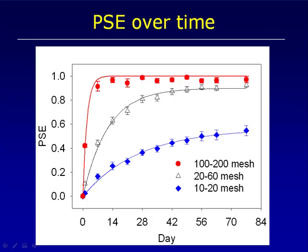The particle size efficiency will change over time. Our standard time to make this analysis is after seven days incorporating the limestone into peat, keeping it warm and moist. However, if we continue out over time, you can see that the coarse fractions' PSE starts to approach one, except for the very, very coarse limestones, where not all of that lime will probably ever react during the time frame that we have plants growing through a typical greenhouse crop cycle.